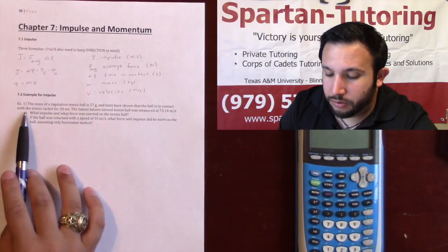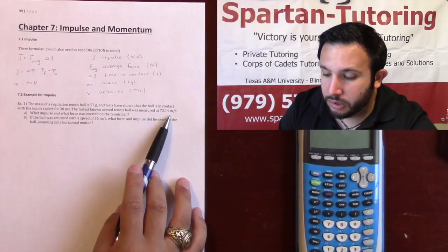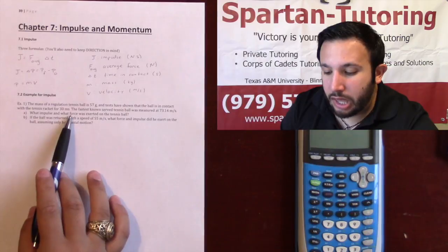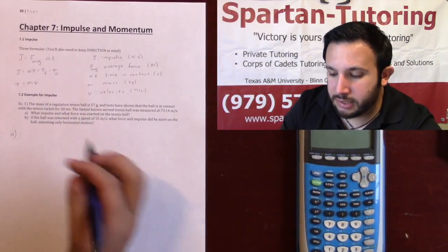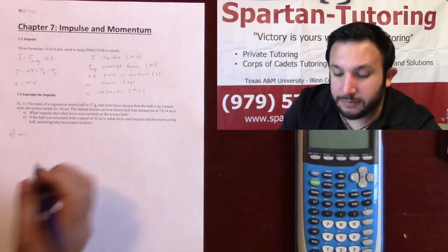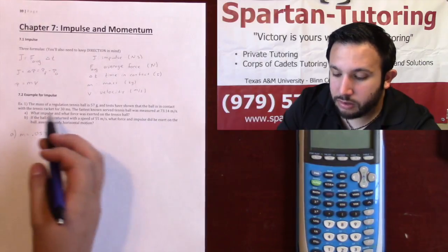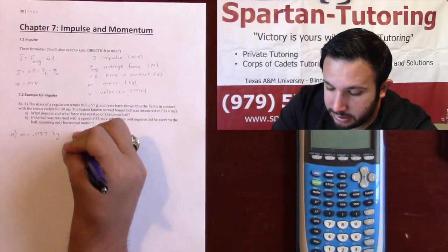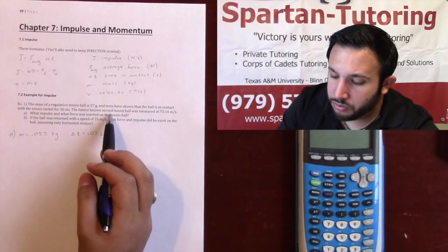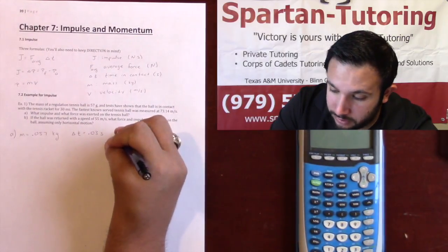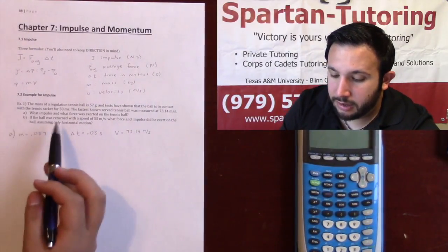The problem says the mass of a regulation tennis ball is 57 grams. Tests have shown the ball is in contact with the tennis racket for 30 milliseconds. The fastest known serve was measured at 73.14 meters per second. So: mass is 0.057 kilograms, change in t is 0.03 seconds, and velocity is 73.14 meters per second.